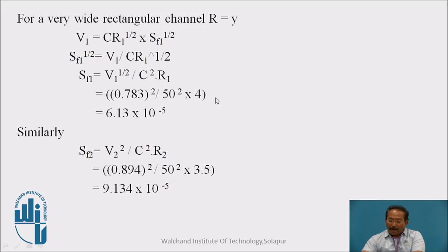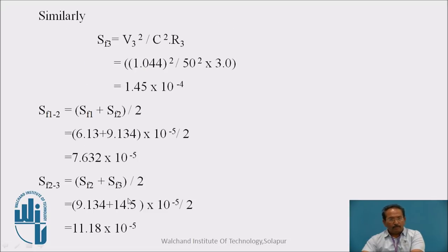For a very wide rectangular channel already we have defined, the r hydraulic mean depth is taken as y. So in the Manning's formula, wherever there is r, we have to keep y. That is for wide rectangular channel, not for any other channel. Otherwise we have to calculate separately A by P. Put these values, we will get Sf which is 6.13. Similarly Sf2, similarly Sf3. Then we have to find out the averages of these two, Sf12, Sf23.